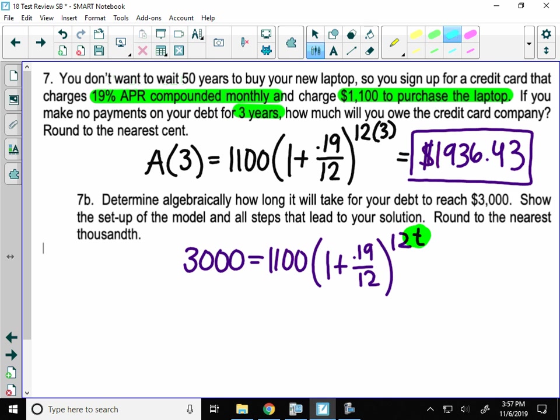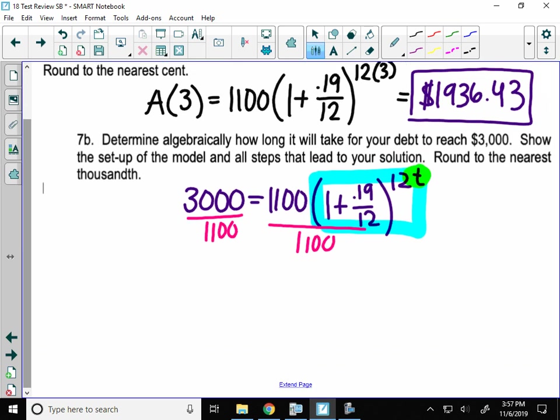Also, just like the last problem, I cannot take the log of both sides until I isolate that part of the exponential, a number to a power. So I'm going to start by dividing by $1,100. And $3,000 over $1,100, I'm just going to simplify that to $30 over $11. And it'll just give you kind of a gross decimal. Leave that as a fraction. Your calculator can deal with that work later.